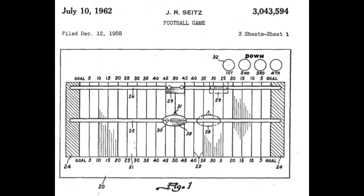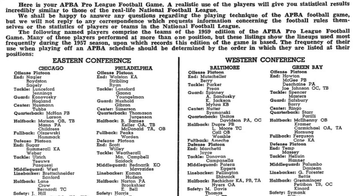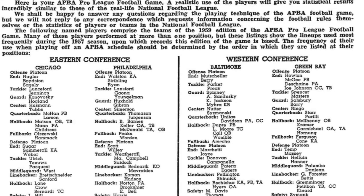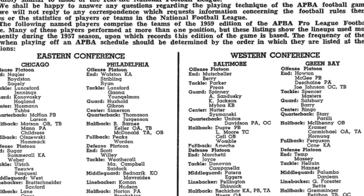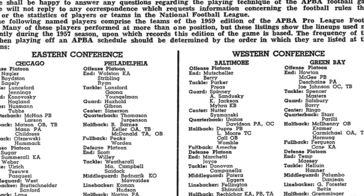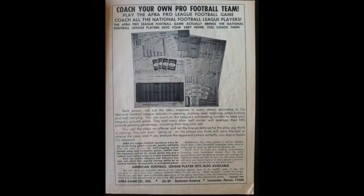APA Football, for those of you who do not know, is one of the oldest, if not the oldest, statistically-based simulation of American football, introduced in 1958 by company founder J. Richard Seitz. The game was labeled the 1959 edition, presumably for shelf-life purposes, and it allowed you to replicate the 1957 season. Quite prescient that it appeared in 1958 — of course, the Colts and Giants engaged in that overtime championship duel dubbed the greatest game ever played.